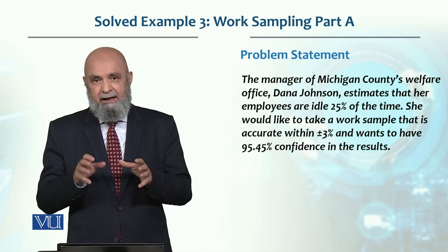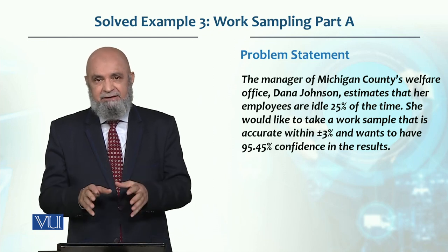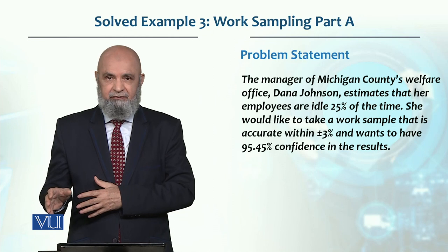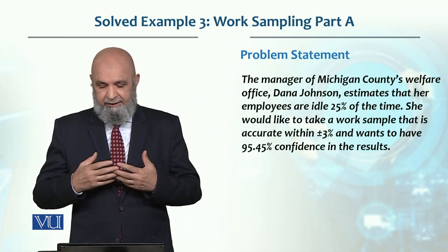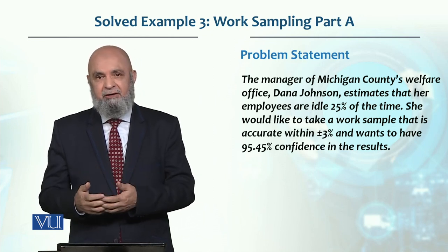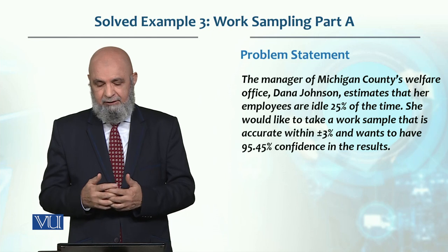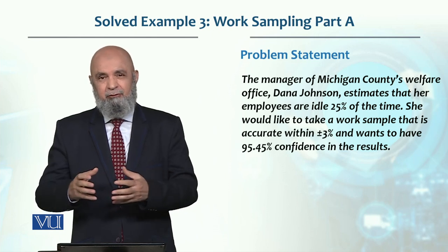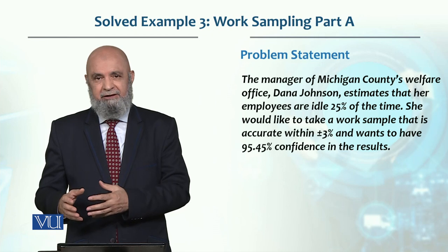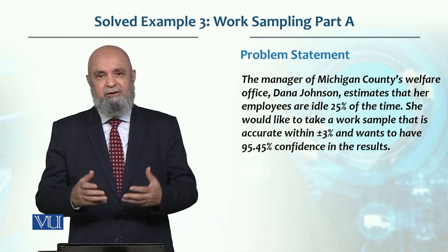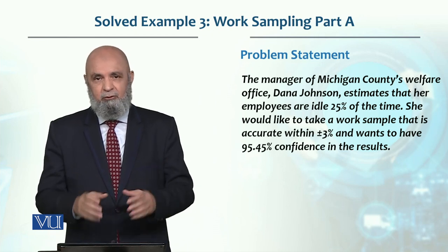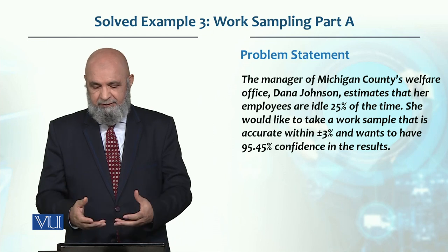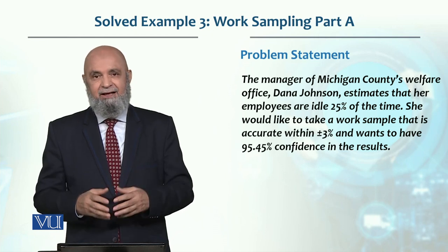That is important. The accuracy she wants is plus or minus 3%, and she wants a 95.45% confidence level. A 95.45% confidence level means the Z value is equal to 2, as we saw in the chart. On that basis, we need to determine the sample size.